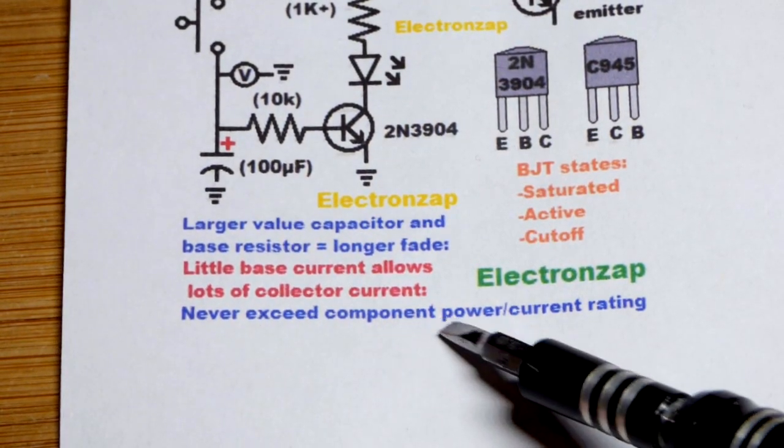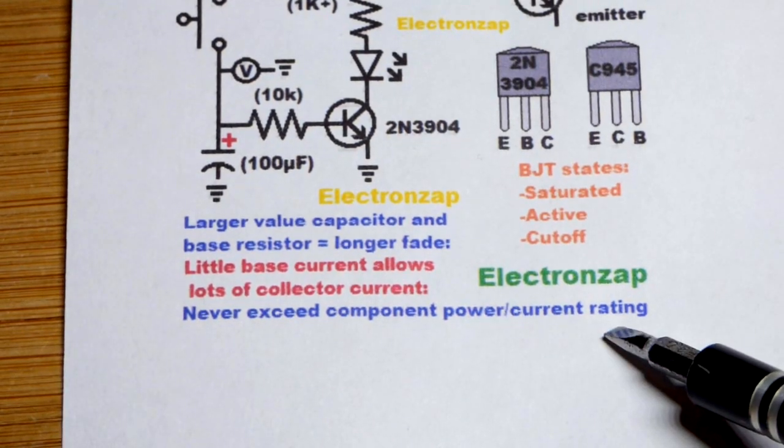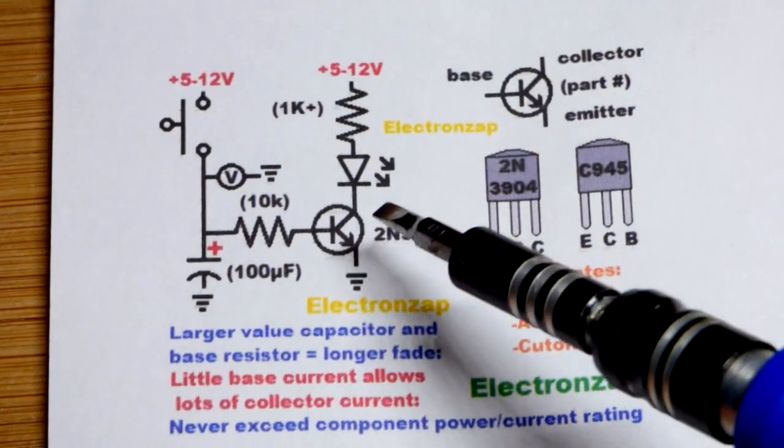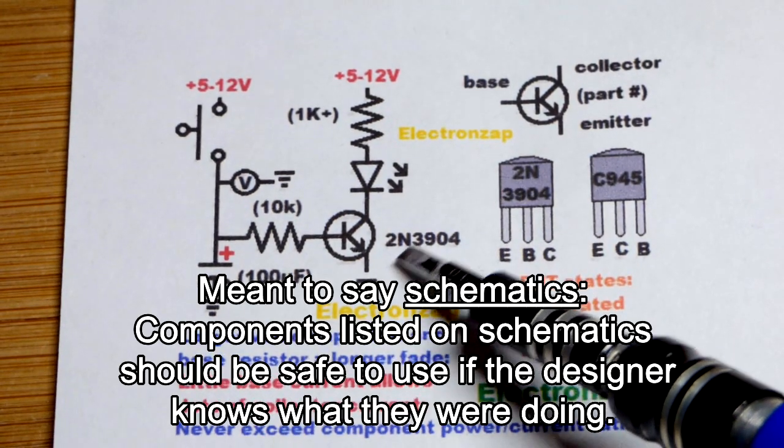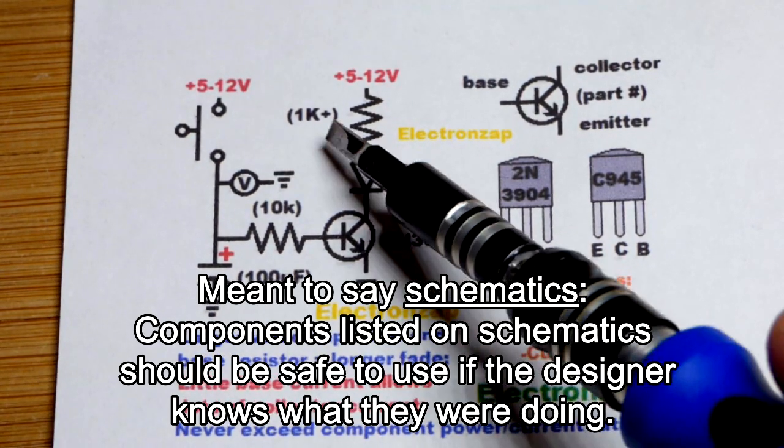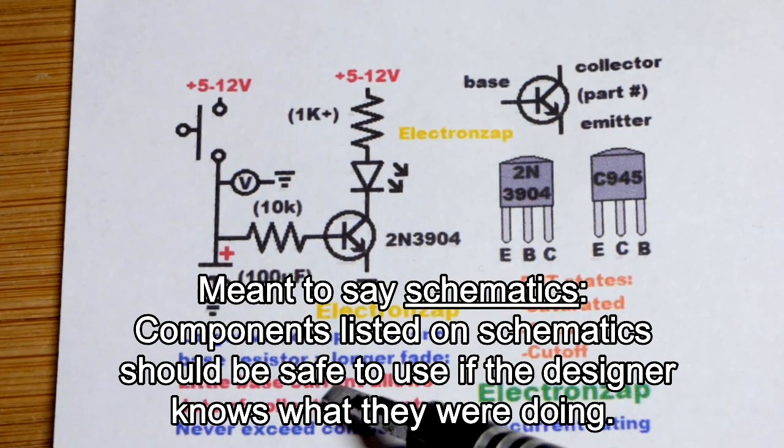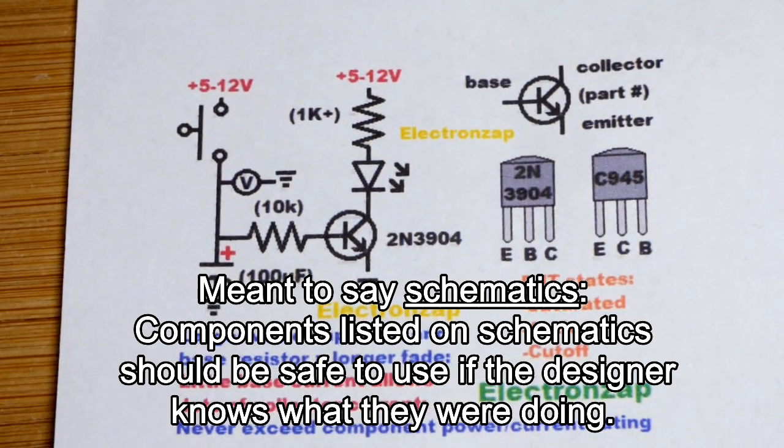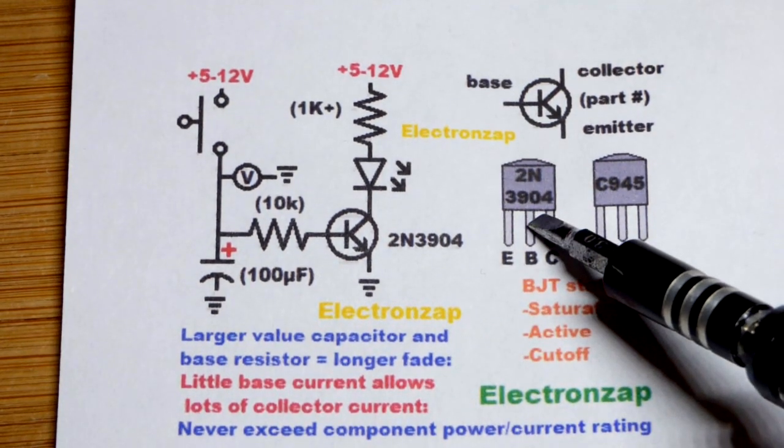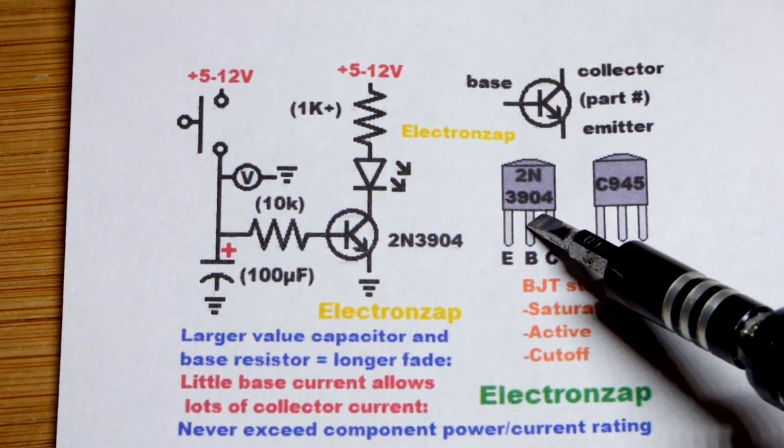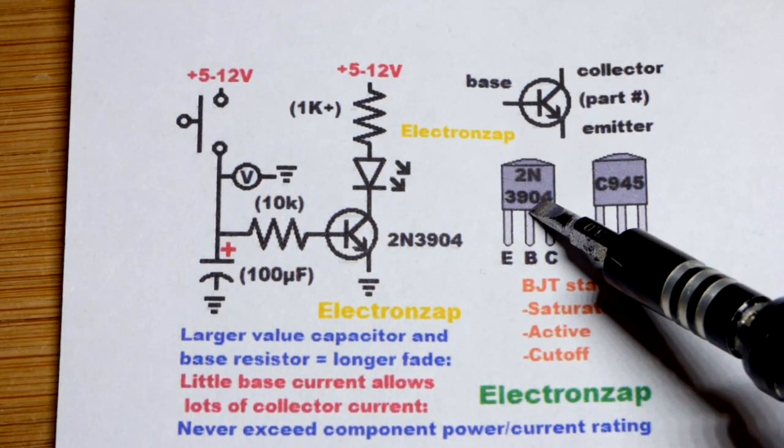And as always, don't exceed the power and current rating of any components. If you're going by a data sheet, then probably you have values or part numbers written on there, you can just use them. It should be safe to use those values or part numbers, but they could also make a mistake. So it's still a good idea to look up the data sheets of the power handling capabilities of components as much as possible.